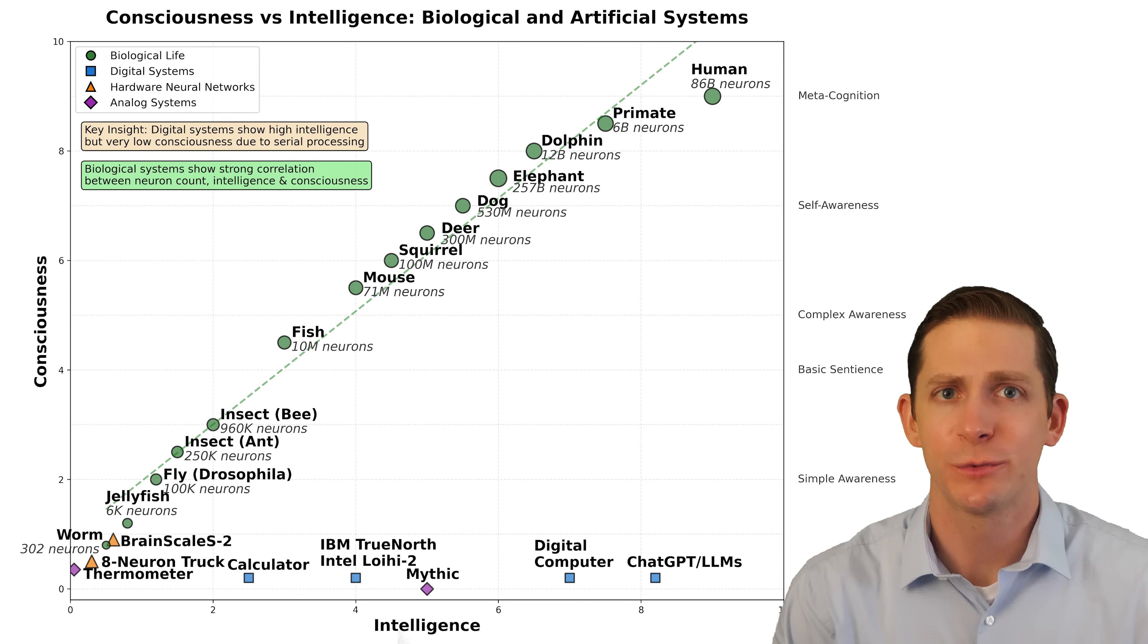I made a video about how consciousness works and explained that this design has less consciousness than a worm, like a C. elegans that has around 302 neurons. But in my opinion, this small artificial brain has more consciousness than a computer, and even more consciousness than a multimodal AI system like chat GPT.